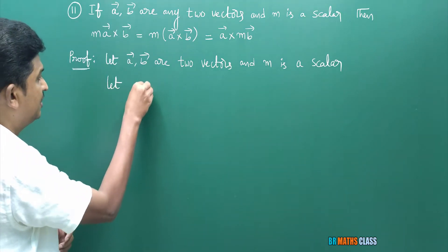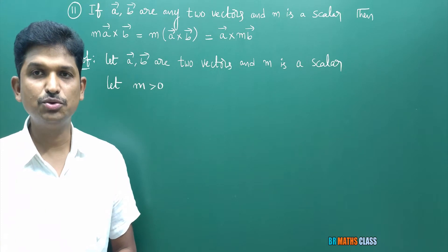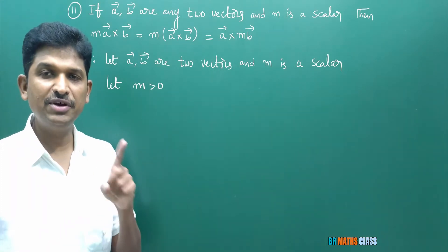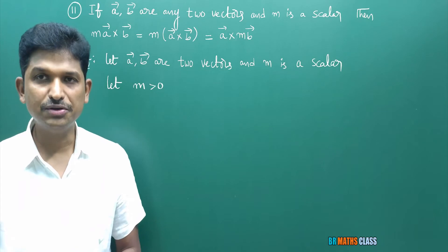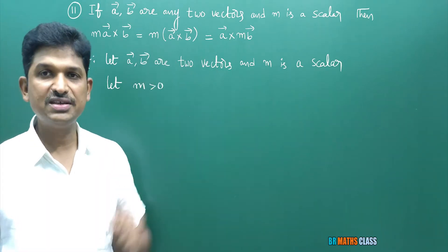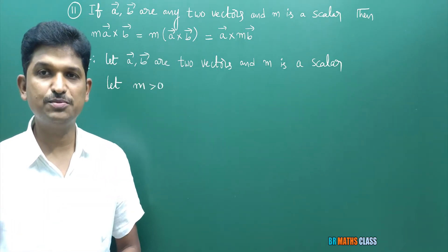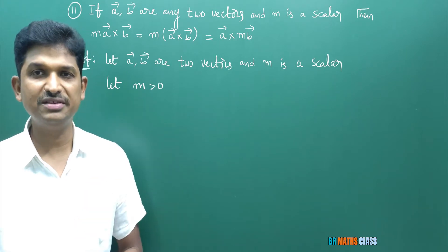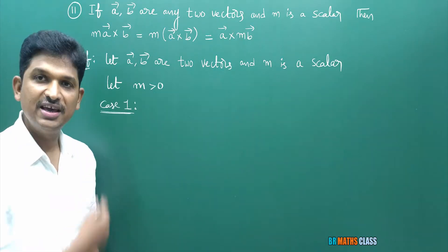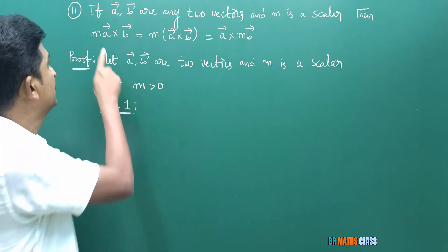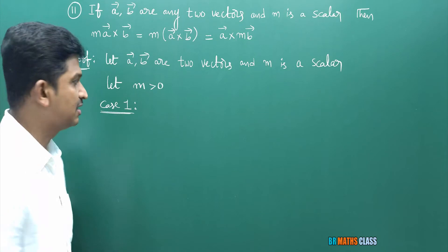Let m be greater than zero — I consider m as positive. Throughout this proof, whenever you see m, consider m as positive. I will prove this result in three cases: Case 1 when m is positive, Case 2 when m is negative, and Case 3 when m equals zero. What I am trying to prove is m·(a̅ × b̅) = m(a̅ × b̅).